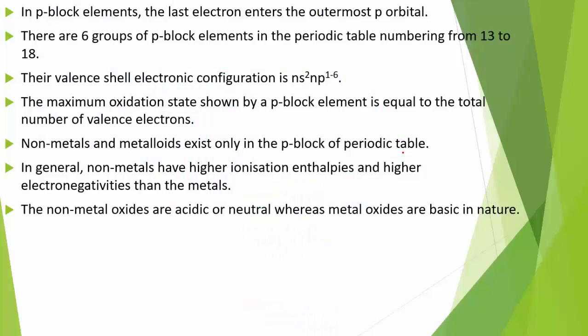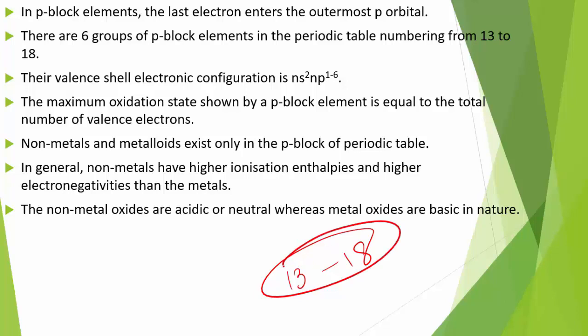In P-Block Elements, the last electron enters the outermost P orbital. The maximum number of electrons that can be accommodated in a set of P orbitals is 6, since P orbitals number 3. Consequently, there are 6 groups of P-Block Elements in the periodic table, numbered from 13 to 18.